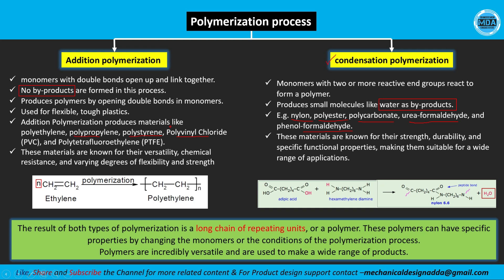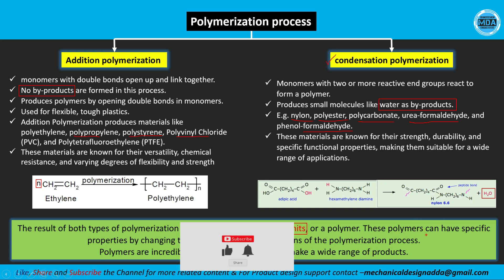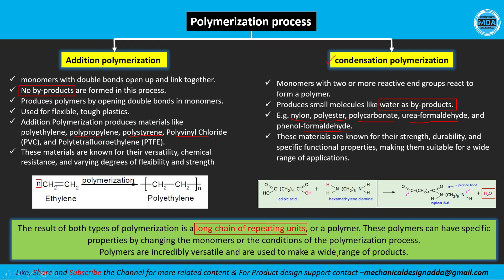In both processes we get a long chain of repetitive monomers, which we call a polymer or plastic material. A polymer can have specific properties by changing the monomer or the conditions of the polymerization process. Polymers are incredibly versatile and are used to make a wide range of products.